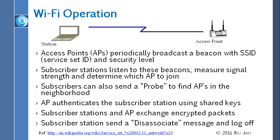Sometimes access points don't broadcast, and some people set up their networks so that they don't broadcast. That's actually a security measure — if you want to be really secure, you don't broadcast your SSID, and then people have to already know it. A subscriber can send a probe to find APs in the neighborhood, and the APs authenticate the subscriber using shared keys. The station is authenticated, then they exchange encrypted packets using that shared key. The subscriber sends a disassociation message to log off.